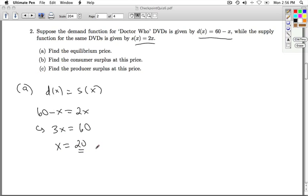Now, 20 is not the price. 20 is the DVDs that you're going to sell. So the equilibrium price, you take that 20 and plug it into either the demand or the supply. You should get the same answer.